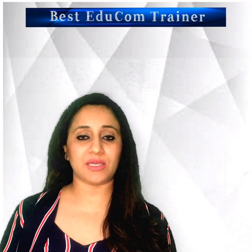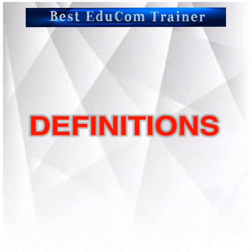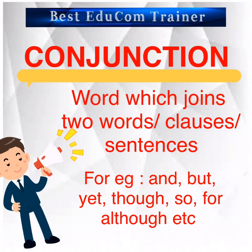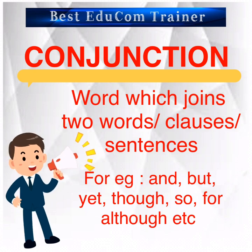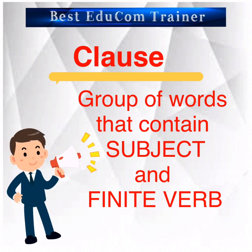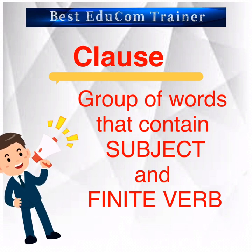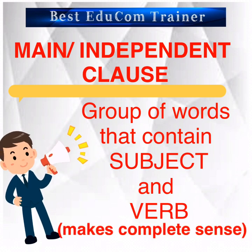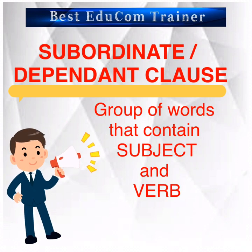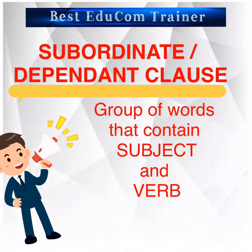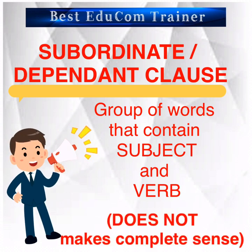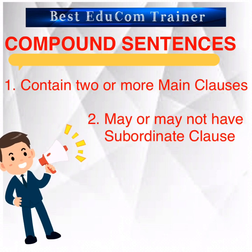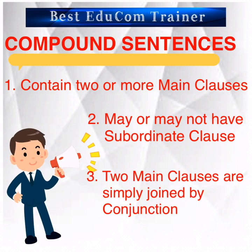Back to Mehak Ma'am's class. Time to move ahead to the next topic. A conjunction is a word which joins two sentences, words, or clauses — for example: but, and, yet, so, for, although. A clause is a group of words that contains a subject and a finite verb and is the smallest grammar unit that may or may not express a complete thought. A main clause contains a subject and a verb and makes complete sense. A subordinate clause contains a subject and a verb but does not make complete sense on its own. In a compound sentence, there are always two or more main clauses, which may or may not have a subordinate clause, and the two main clauses are joined by a conjunction.